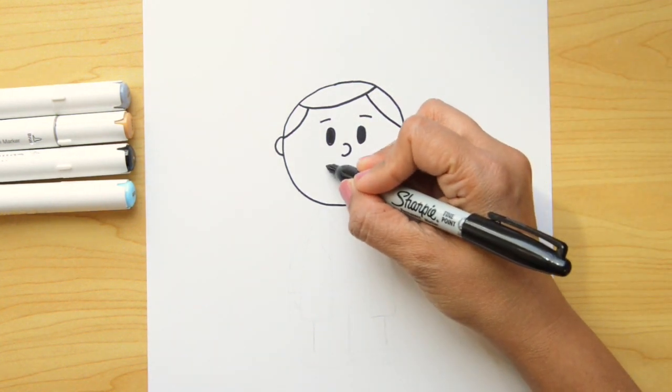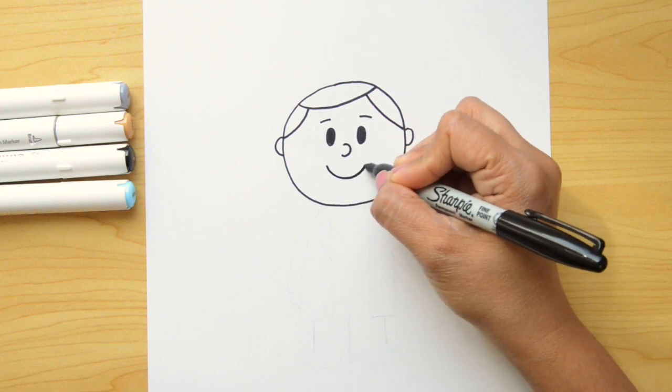Now let's put a smile on him and I'm gonna do a curved line that goes side to side, just like this.